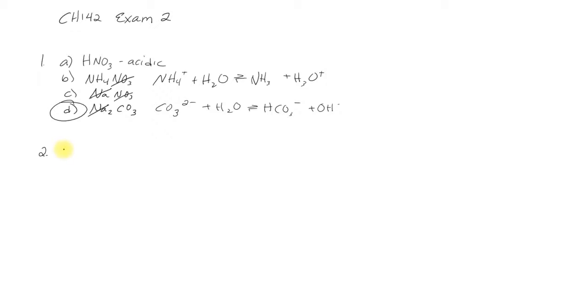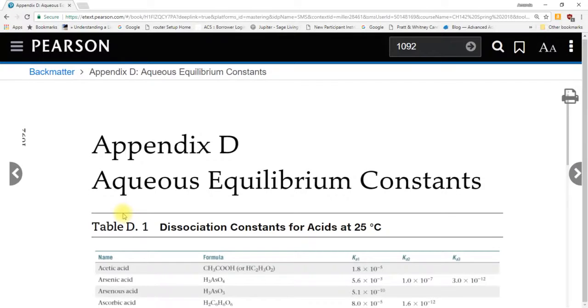Number two is asking for what is the least acidic. Our choices, they give us words. I don't know what chlorous acid is right off the top of my head, but I know where we can look. I'm just copying these questions down.